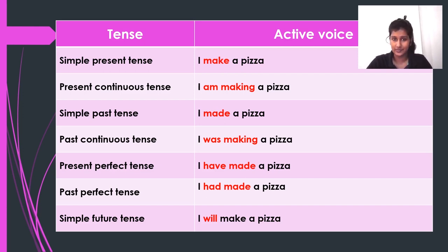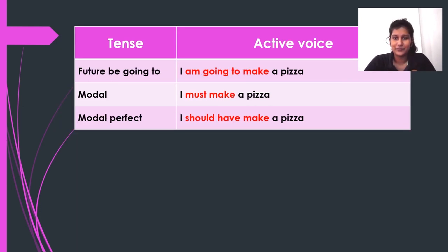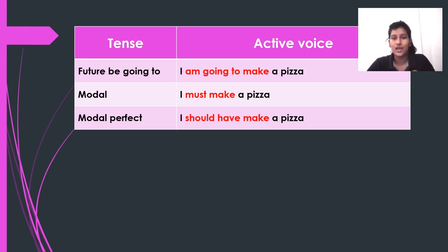We have some more tenses. 'Future be going to' means the future with 'going to' is used to express events you have already planned and your intentions for the future. Since the subject is 'I,' we use 'am.' So: 'I am going to make a pizza.' This is the future with 'going to.'